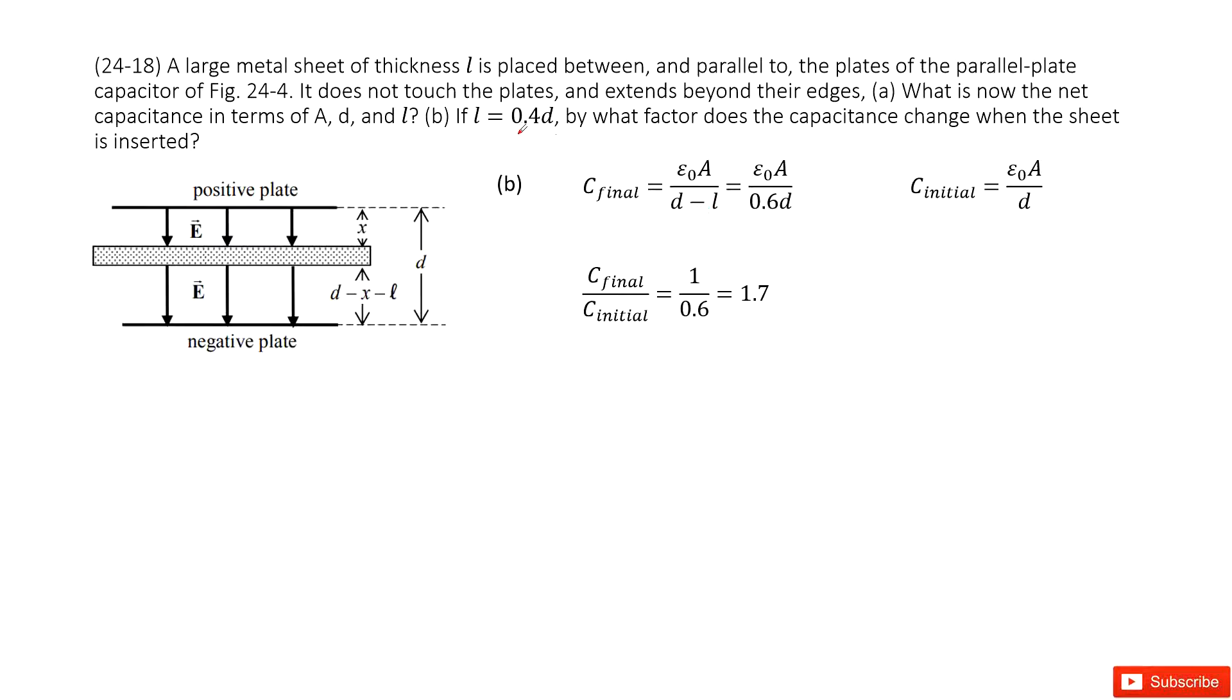In this case, L is 0.4D. So the final capacitance is ε₀A over D minus L. When you put it inside, we get the term like this. Initially, there is no metal sheet, so L equals 0, and we get the initial capacitance. Now we use the final capacitance over initial capacitance—we get the factor. Thank you.